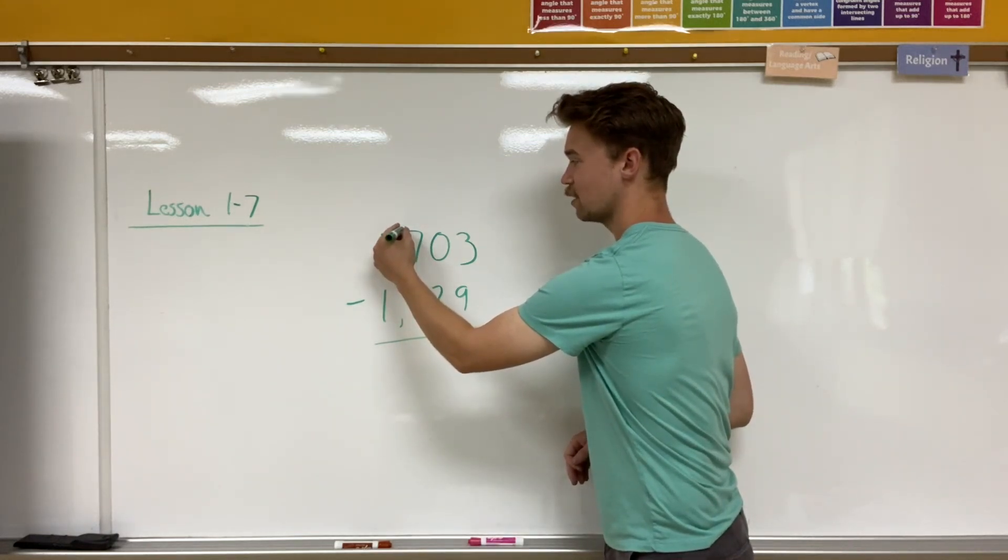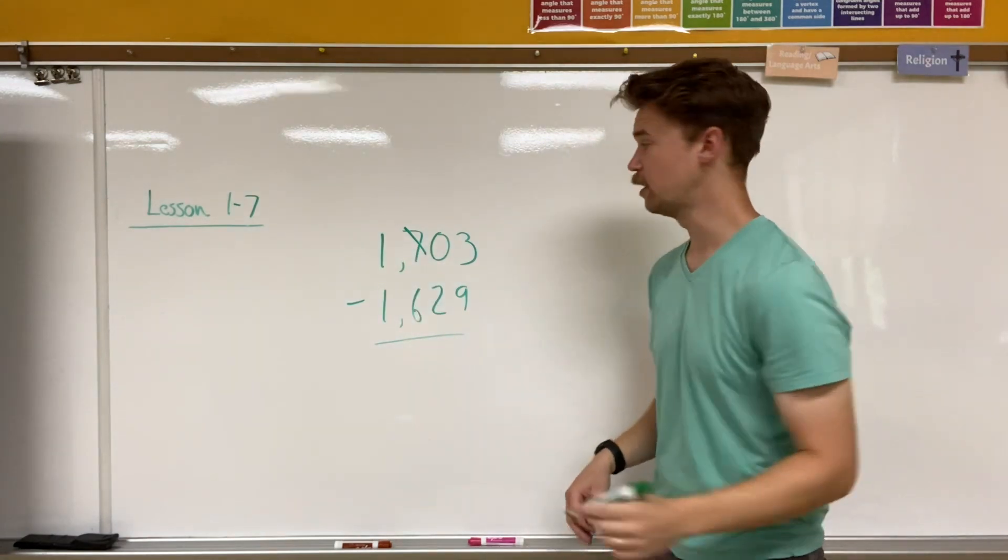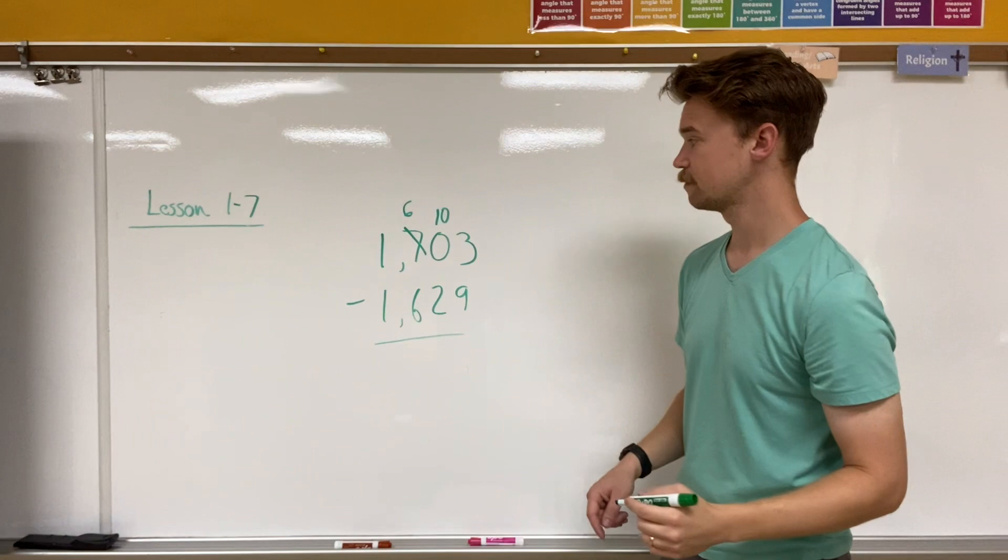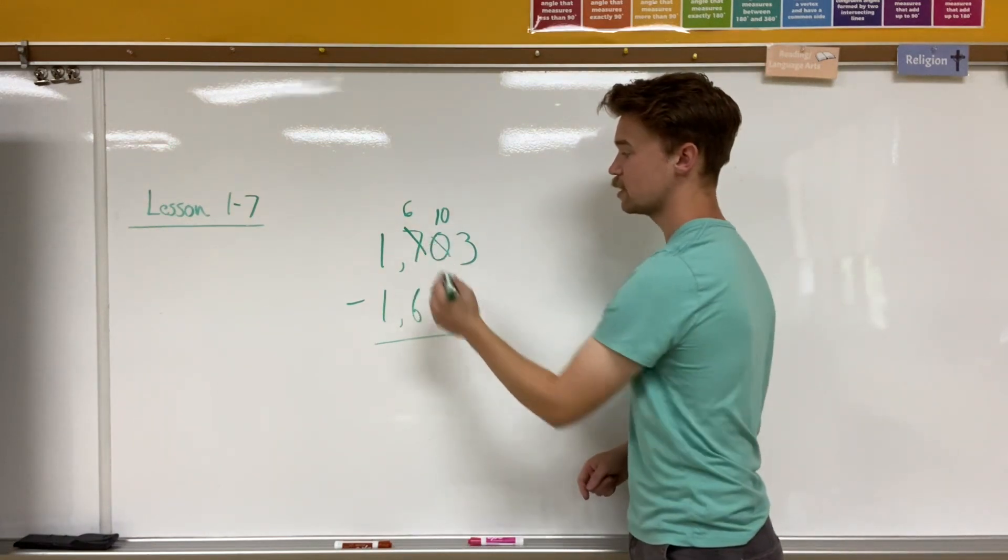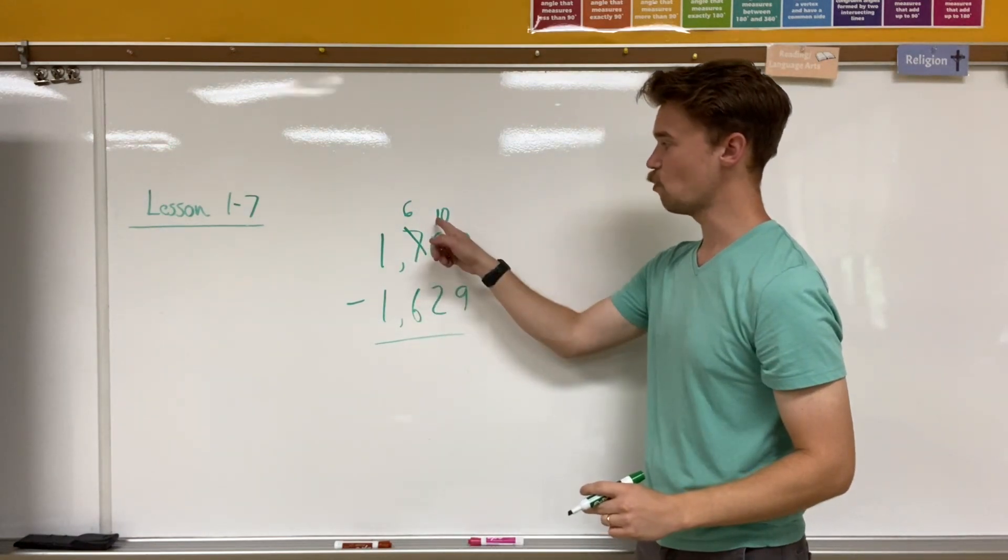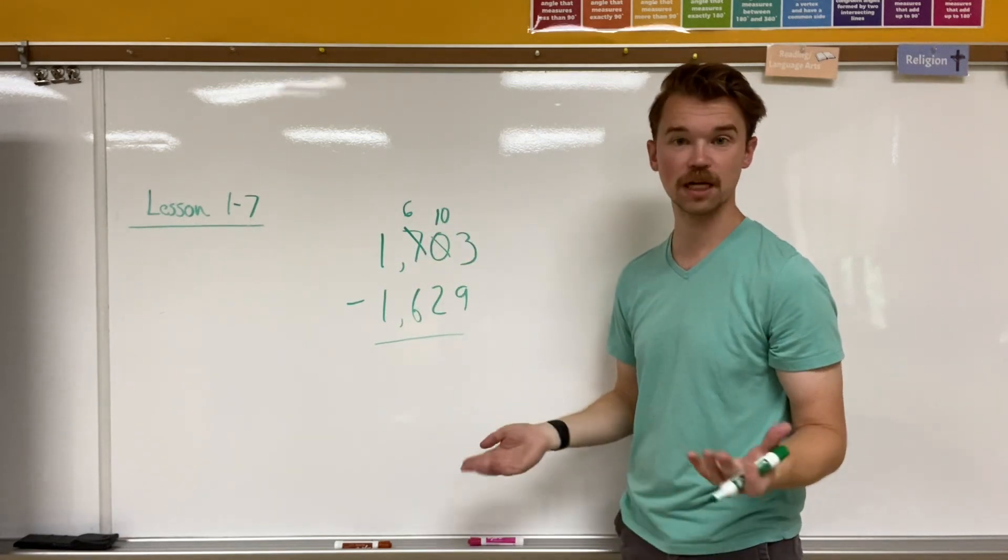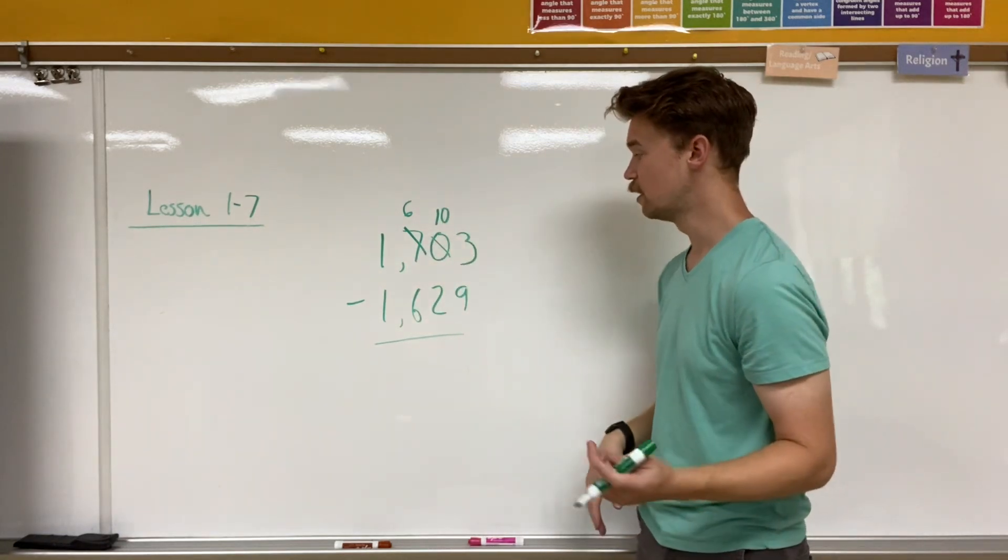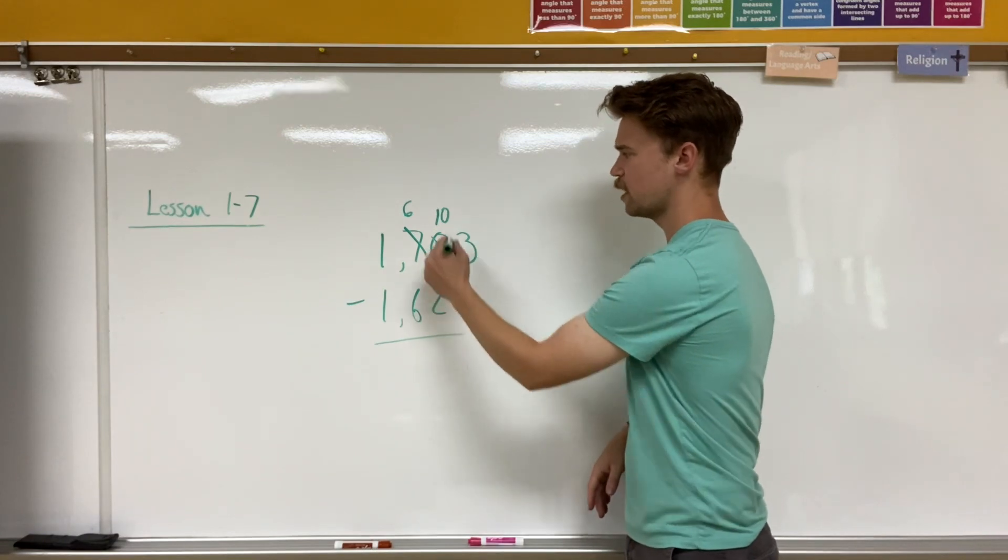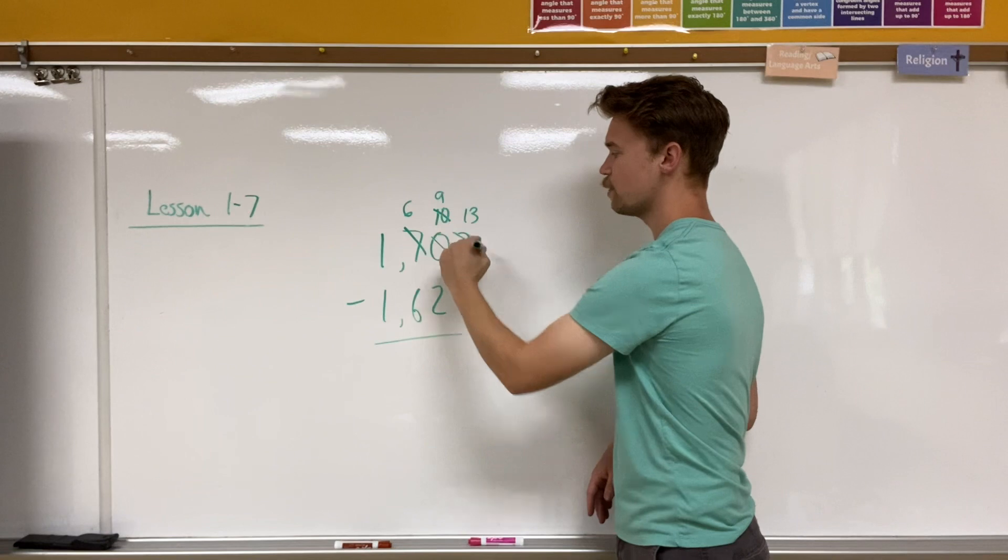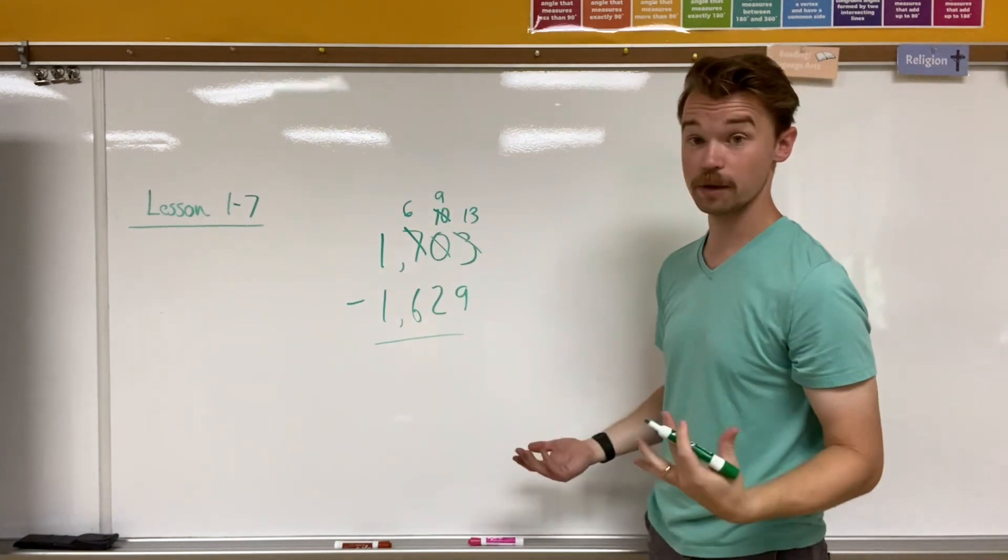So I'm going to take the seven, I'm going to cross it out. It's going to change to a six. And this is going to change to a 10. So it's not a zero anymore. It's a 10. It's taking one group of 100. And now I have 10 groups of 10. 10 times 10 is 100. It has the same value. But I still can't subtract three minus nine. So I'm going to have to cross that 10 out to make it a nine. And that would change this to a 13. So now I'm going to start from the left again.